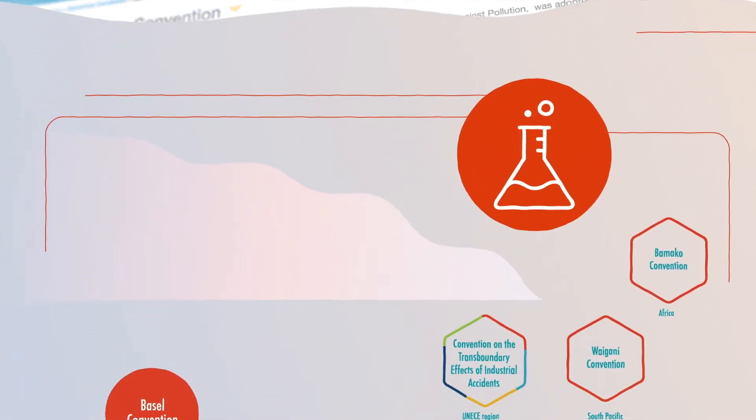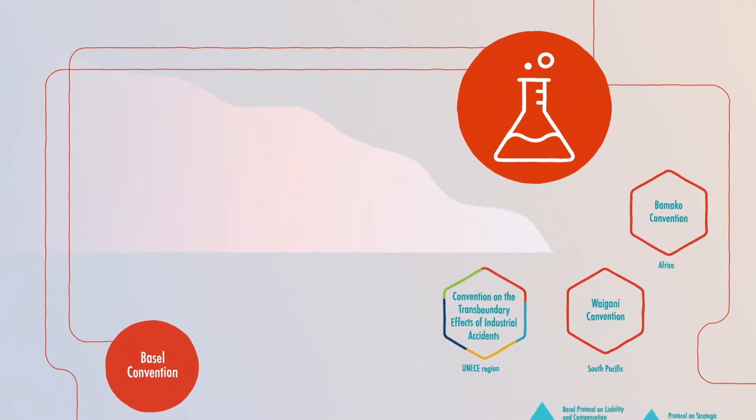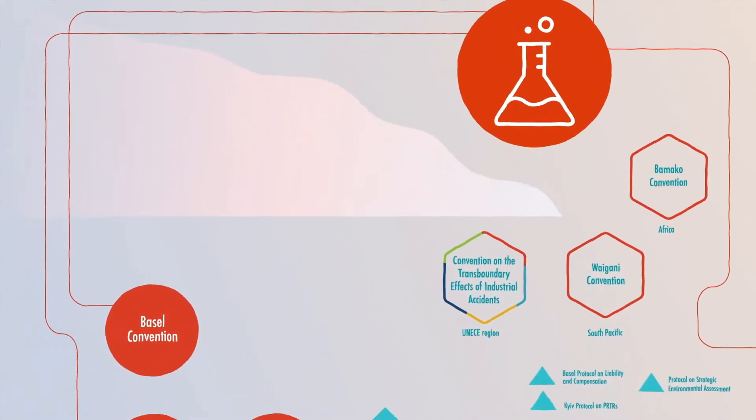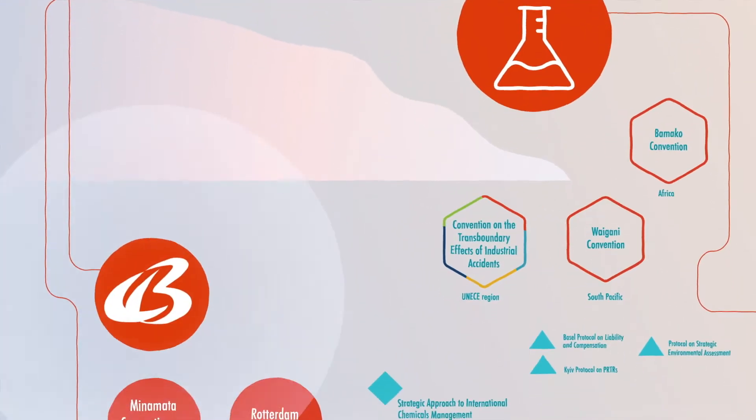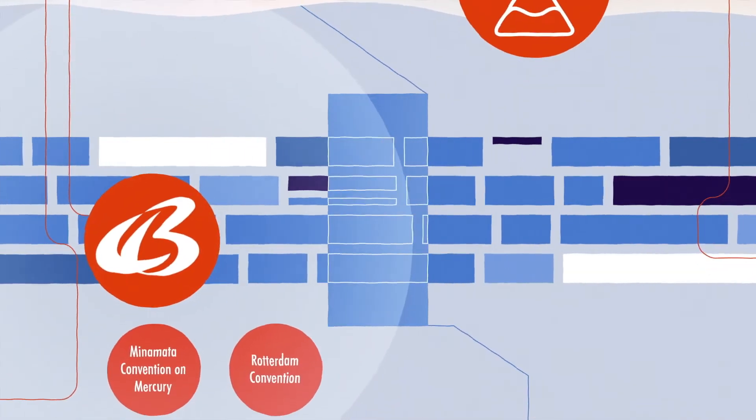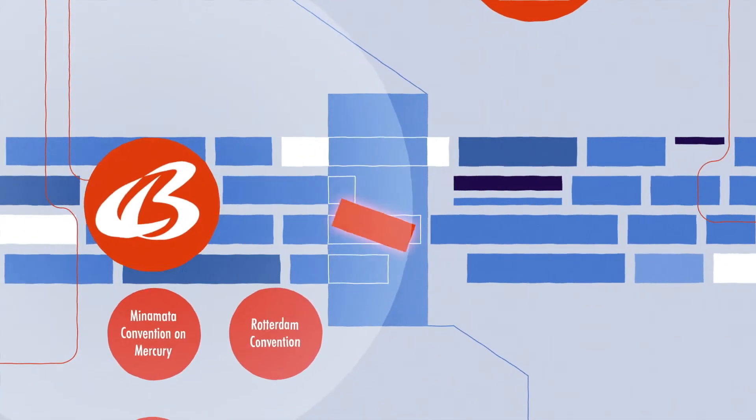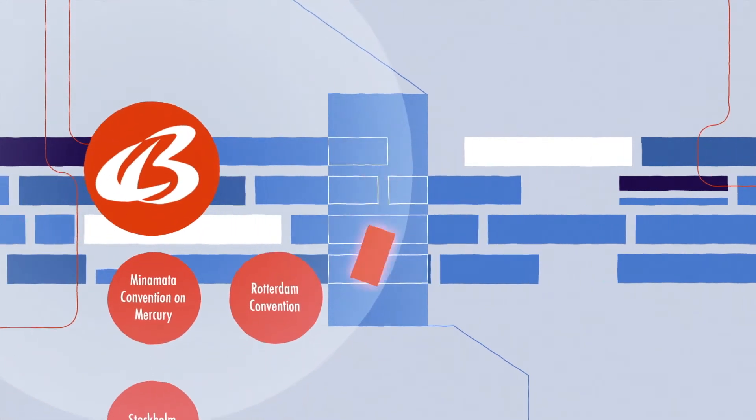MEAs on chemicals and waste are also useful for regulating plastics. In 2019, the Basel Convention was amended to include some plastics as hazardous waste, promoting better control over their movement across borders.